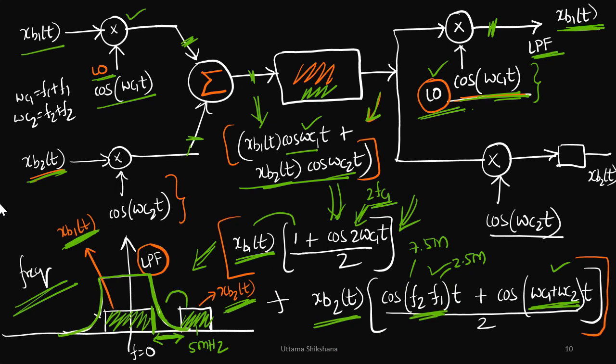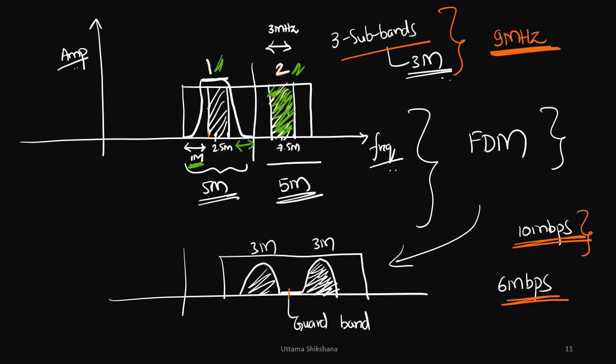If I would have placed close to that first subband, then it would have come within the filter roll-off and some quantity of Xb2(t) would have also been included along with Xb1(t) after the low pass filter. So this concept is actually nothing but frequency division multiplexing.